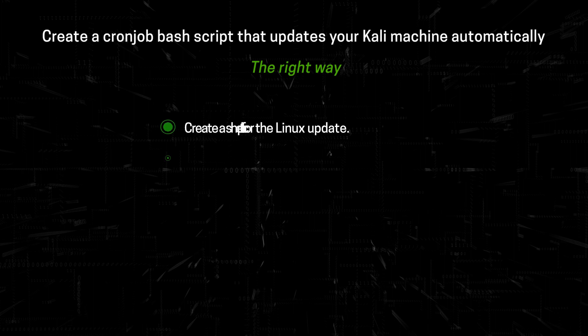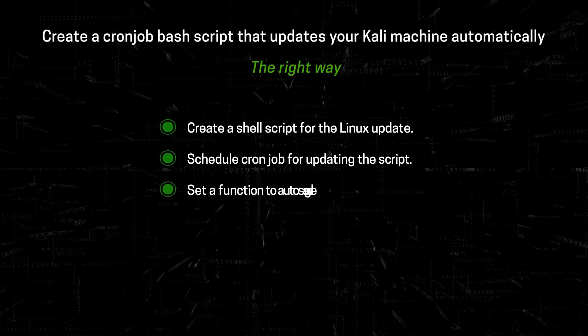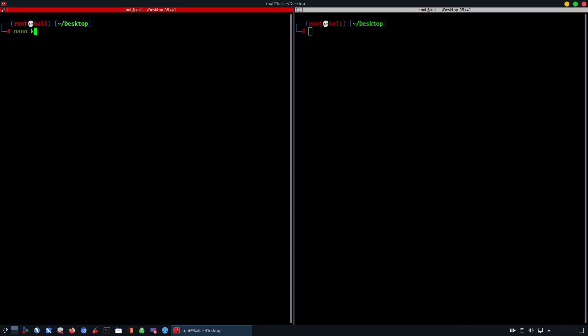So the first thing we'll look at is creating a shell script for the Linux update. The second thing we'll look at is scheduling cron jobs for updating the script. And the third thing we'll look at is setting a function to autosave logs. So let's jump in.